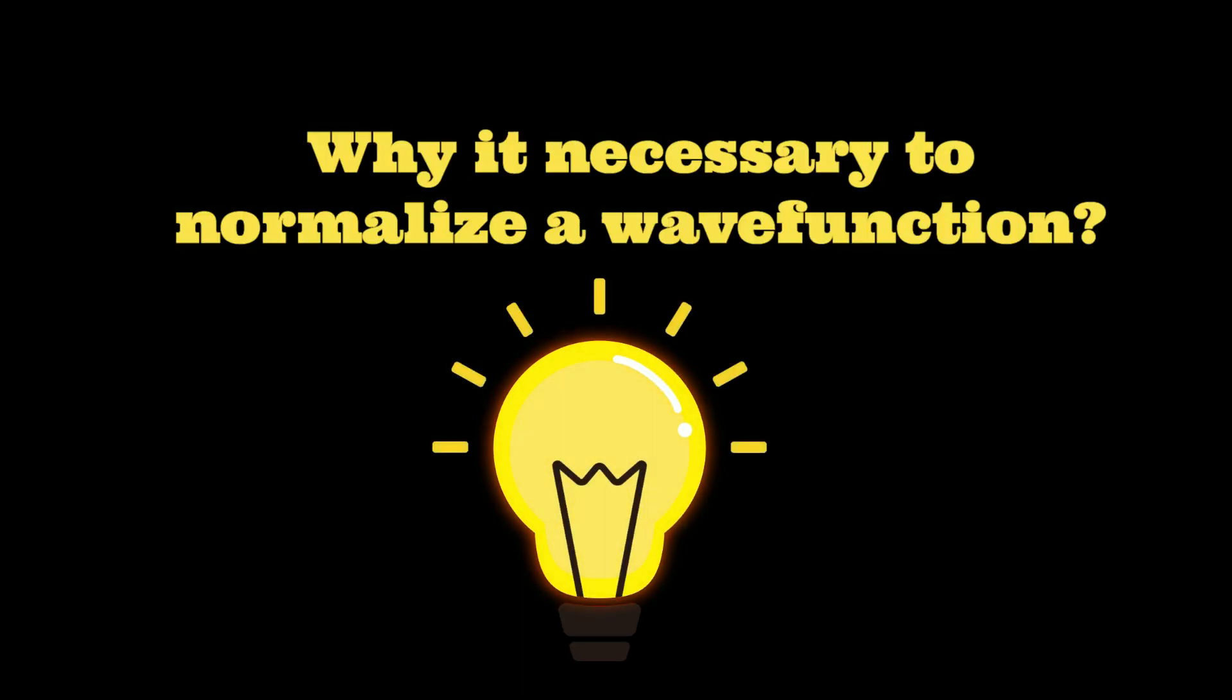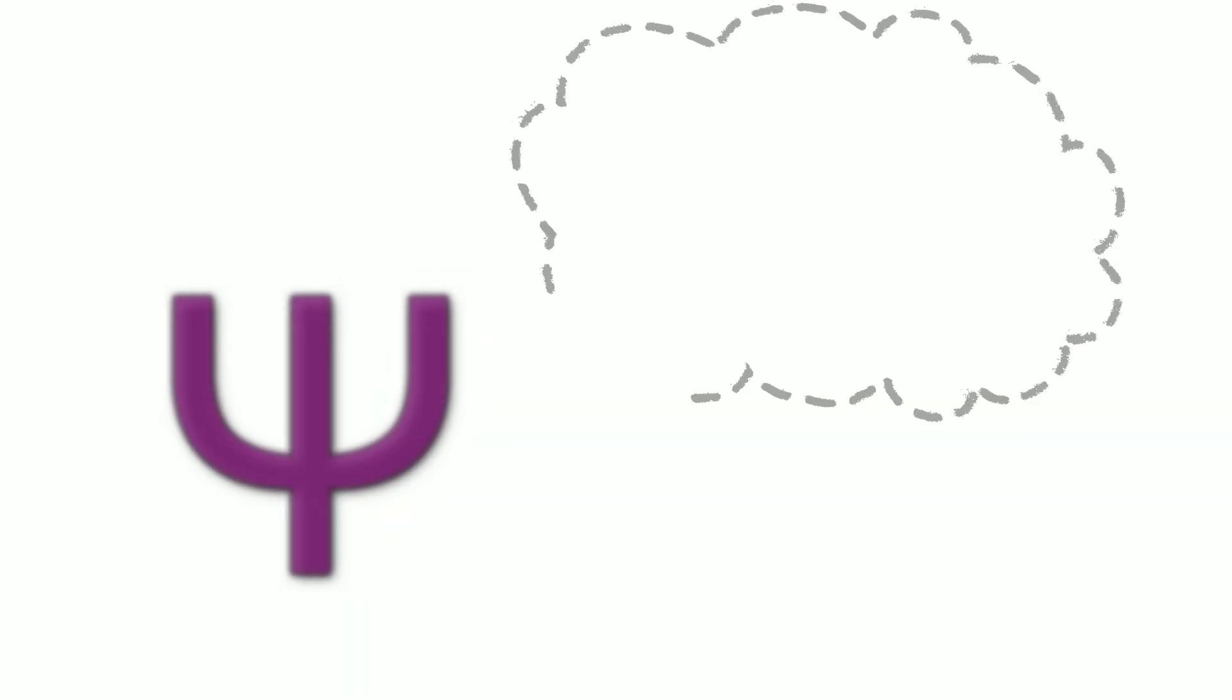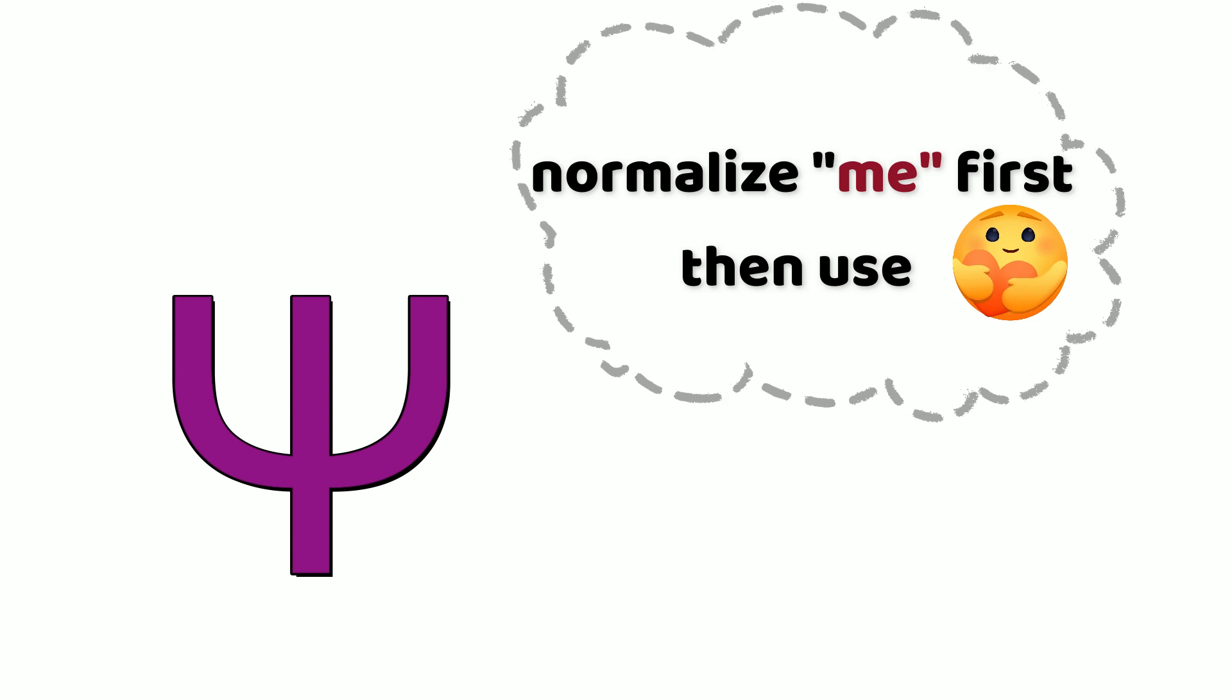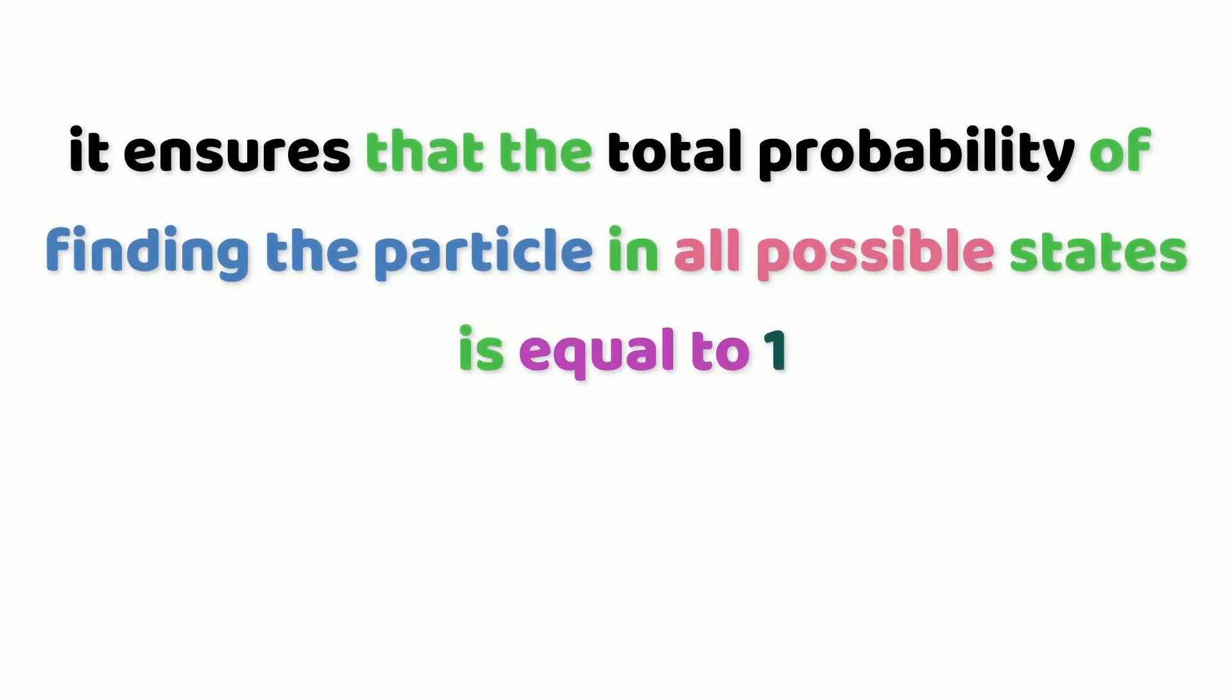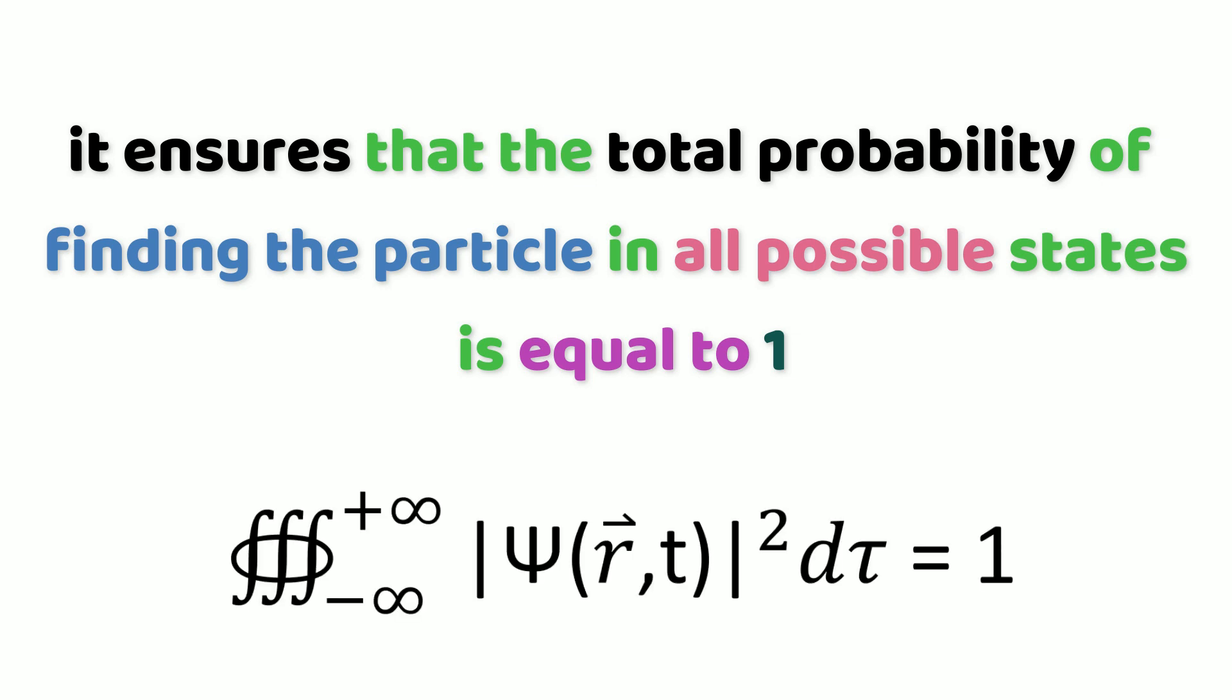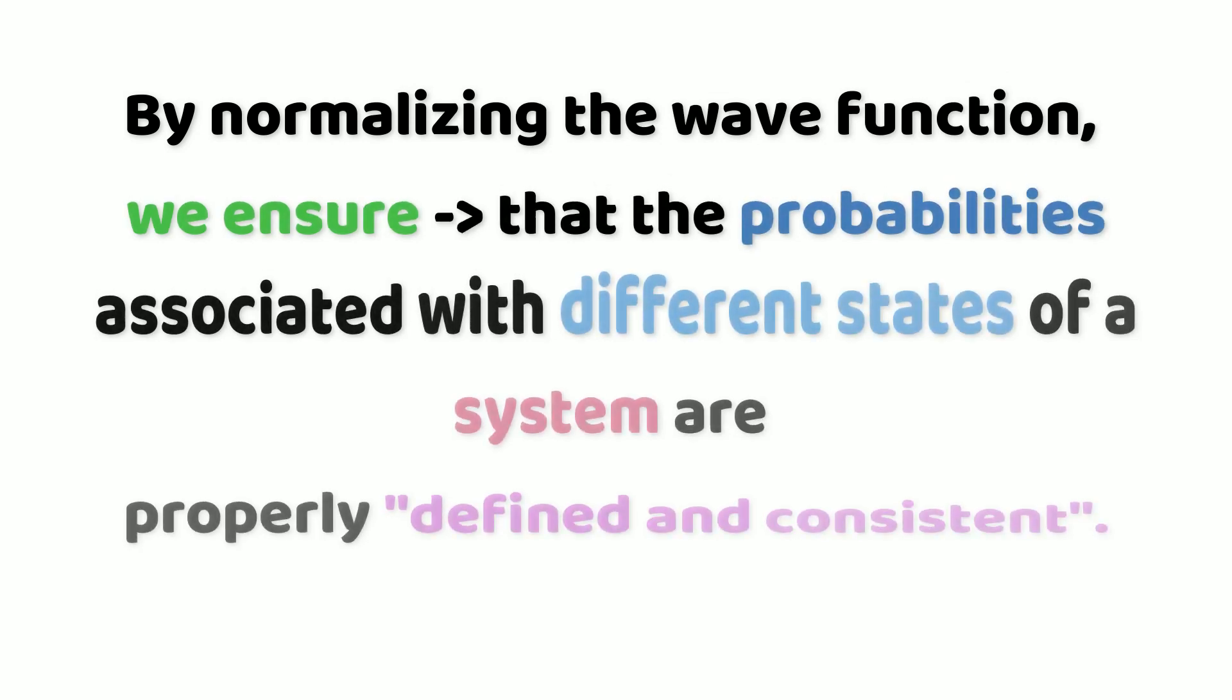Now, why is it necessary to normalize a wave function? Before using the wave function in any calculation, we generally normalize it first. It ensures that the total probability of finding the particle in all possible states is equal to one.